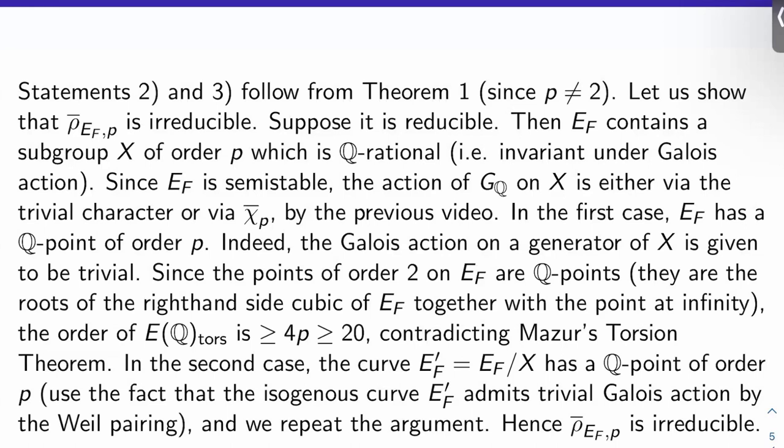That means the Frey curve contains a subgroup X of order P, which is Q rational. Because what we're saying is that the action on the P torsion is reducible by assumption, while the P torsion of E_F is isomorphic to (Z/PZ)², so it's a group of order P squared. For it to be reducible, there would have to be a Galois invariant subgroup of order P inside your group of order P squared. But Galois invariant, in this case, just means Q rational.